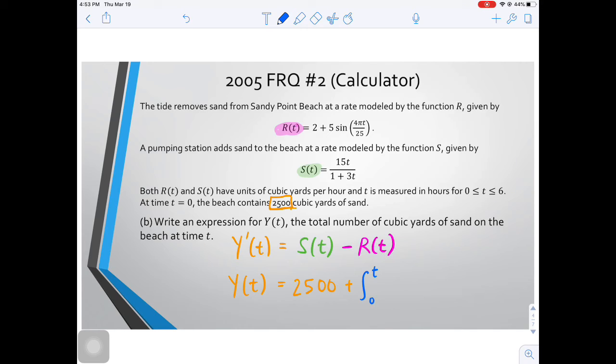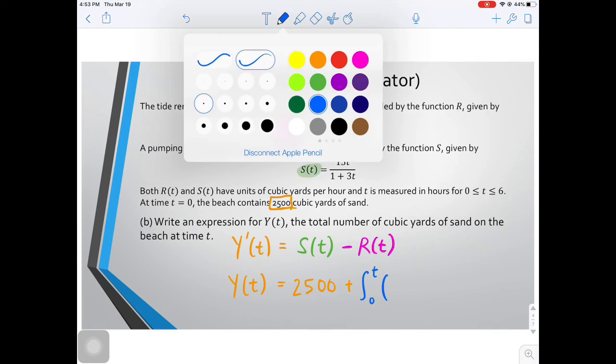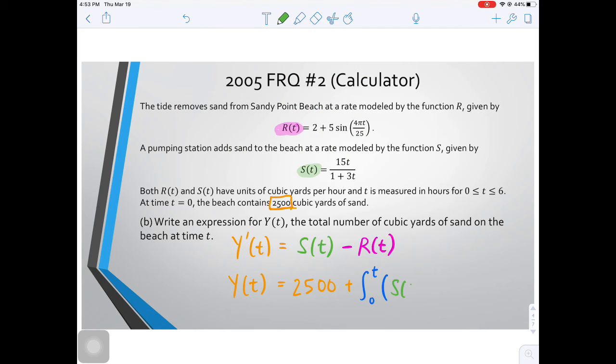Now we're actually going to write what we had previously written as Y prime, which is S(t), but now we're not going to write t, we're going to write S(x). It's a small technicality, but it matters because we've already used the t right here. We don't want to write it again. We're writing like an accumulation function. We don't want to use the same variable twice. So S(x) minus R(x) dx.